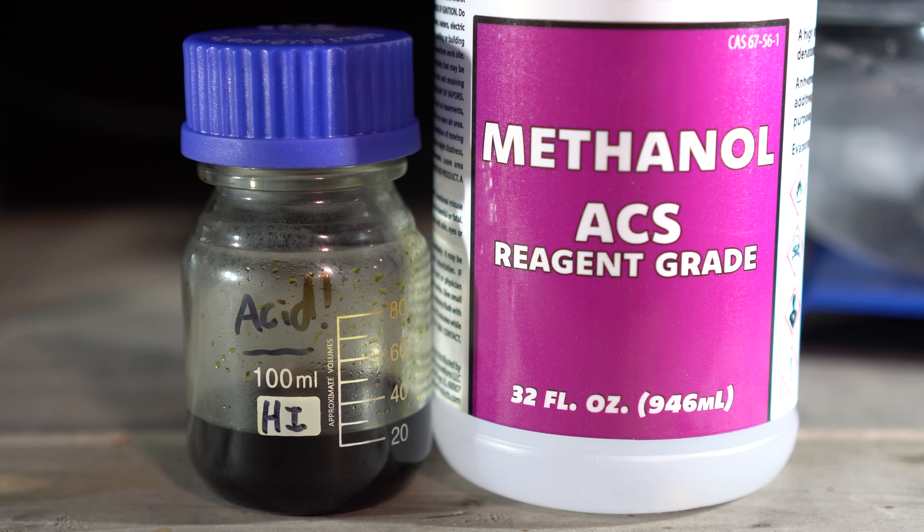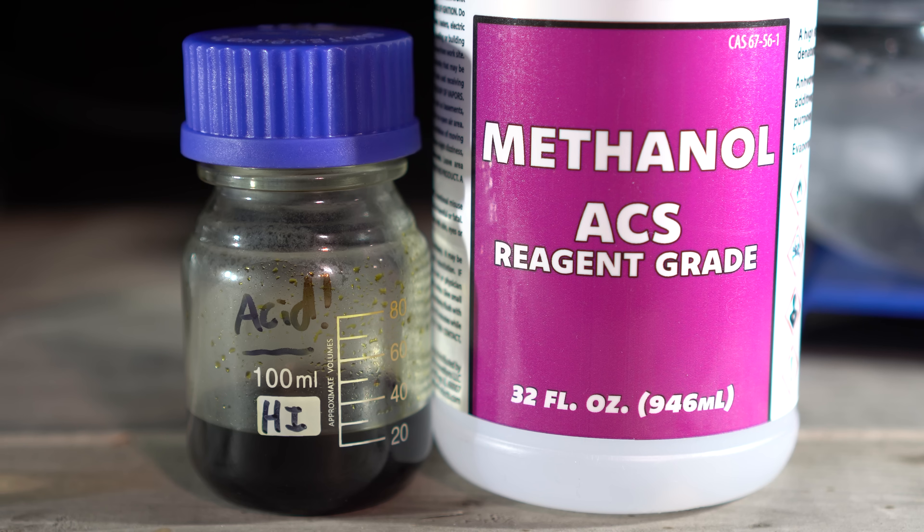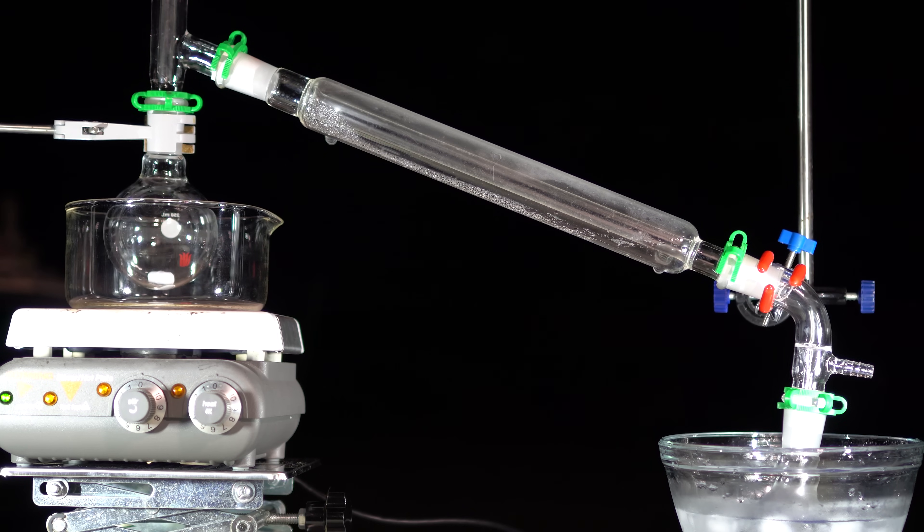Today, we will be making iodomethane. Iodomethane is commonly used as a methylating agent since it's an excellent substrate for SN2 substitution reactions. It is sterically open for attack by nucleophiles and iodide is a good leaving group. We are going to set up for a simple distillation as we will distill out the iodomethane after being formed.